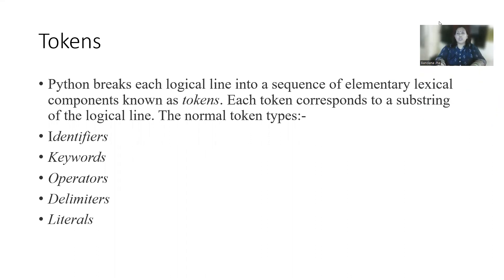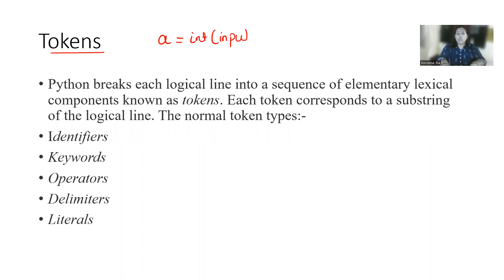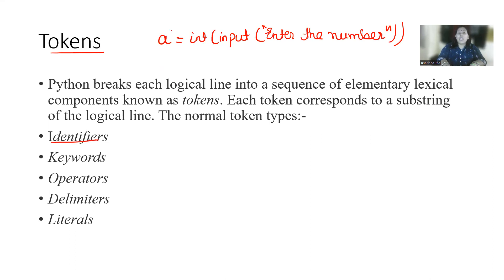So first we will start our tokens. In Python, whatever program we are writing — just like if I am writing 'a = input("Enter the number")' in inverted commas and then close it. So identifiers are this — that is your variable. And we know that a variable starts from an alphabet, maybe uppercase, that is in caps form, maybe small case, that is in small letters — capital letter or small letter.